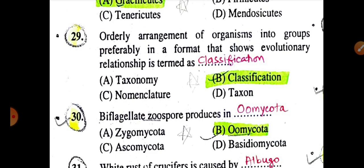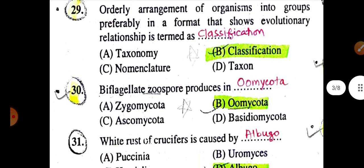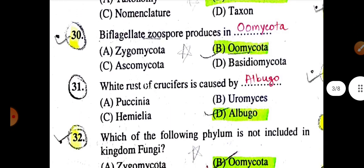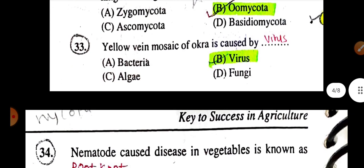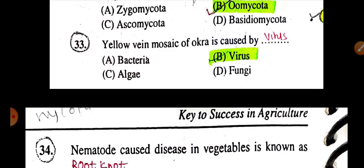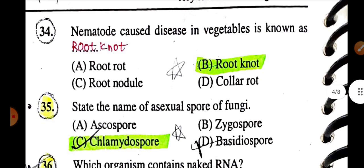Orderly arrangement of organisms into groups preferably in a format showing evolutionary relationships is termed as classification. Black flagellate zoospores produced in oomycota. White rust of crucifers is caused by Albugo. Which of the following phyla is not included in kingdom Fungi? Answer: Oomycota. Yellow Vein Mosaic of okra is caused by virus. Nematode-caused disease in vegetables is known as root knot.